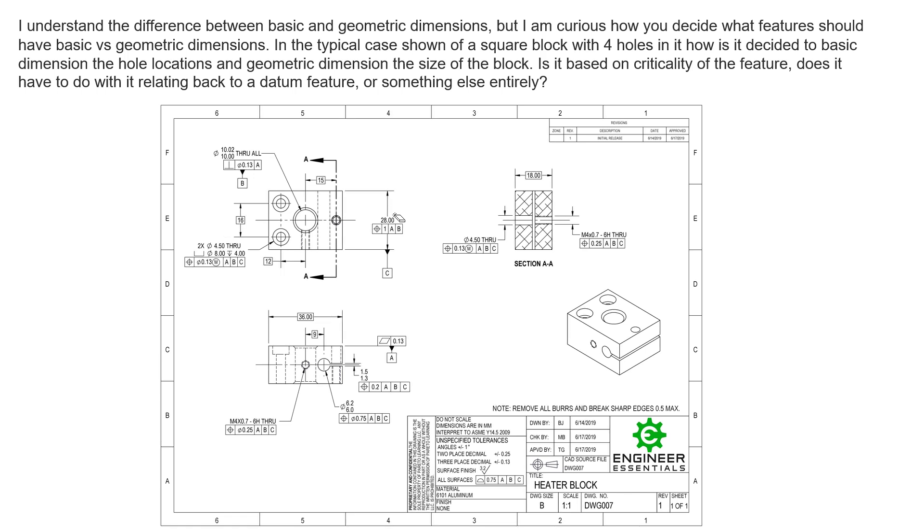So we'll go ahead and convert this drawing here. And we see that we've changed those dimensions to basic dimensions. And those basic dimensions identify where the features should be. Again, these basic dimensions don't have tolerances. And we see the tolerance as far as where the location of it can be diametrically is 0.13 millimeters. And so we can see we can easily just convert these drawings to use basic dimensions and geometric tolerances and gain all the benefits of using GD&T on this drawing.